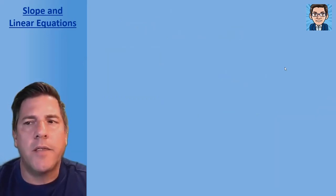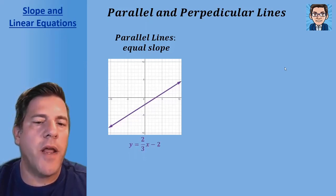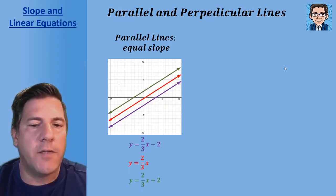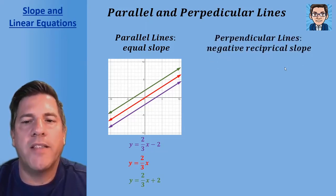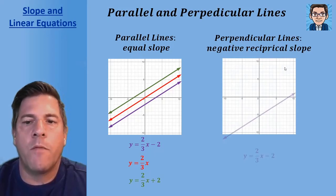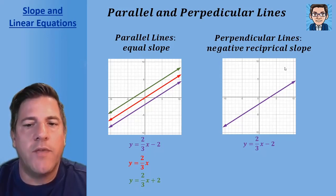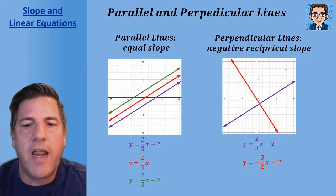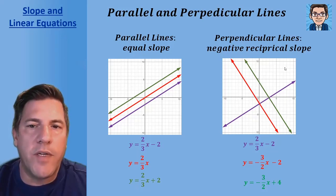Parallel lines have equal slope. So y = (2/3)x − 2, y = (2/3)x, and y = (2/3)x + 2 all have the same slope of two-thirds and are parallel. Perpendicular lines have a negative reciprocal slope. For y = (2/3)x − 2, we flip two-thirds to get three-halves, then negate it to get negative three-halves. So any line with slope negative three over two is perpendicular to our line with slope two over three.